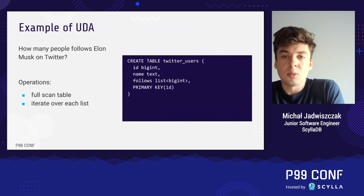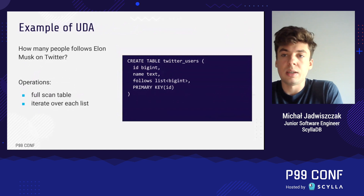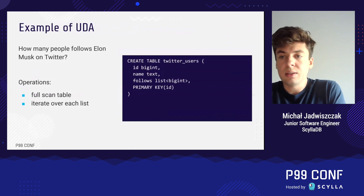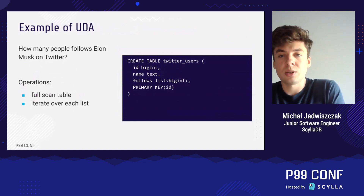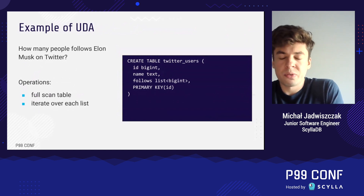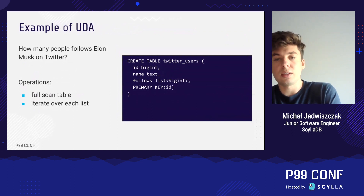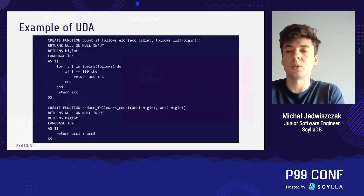To allow distribution of UDAs, we have introduced a new optional parameter: a reduce function. When this parameter is defined, distribution of the aggregate is possible and will be performed. It's worth noting that it's not possible to define a reduce function for every aggregate, and it is the developer's responsibility to define a correct one.